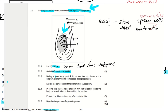Question 2.2.3 says during a vasectomy, part A is cut and tied. Remember part A is the sperm duct. So we are cutting and tying the sperm duct as shown in the diagram. The sperm duct's responsibility is to transport the sperm cells from the epididymis into the sperm duct until they reach the urethra.